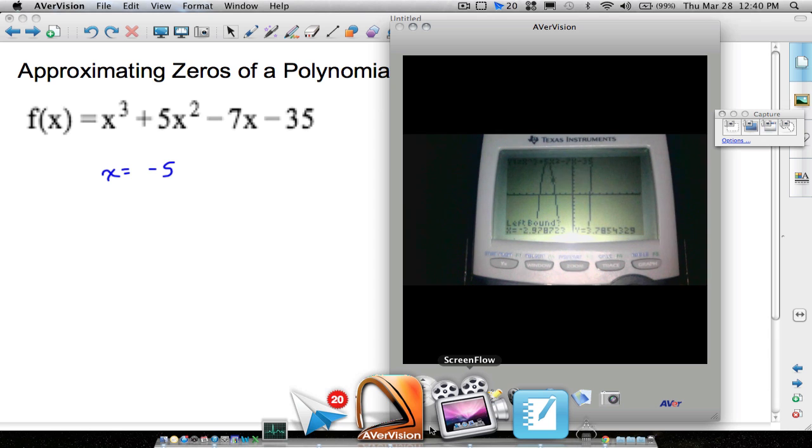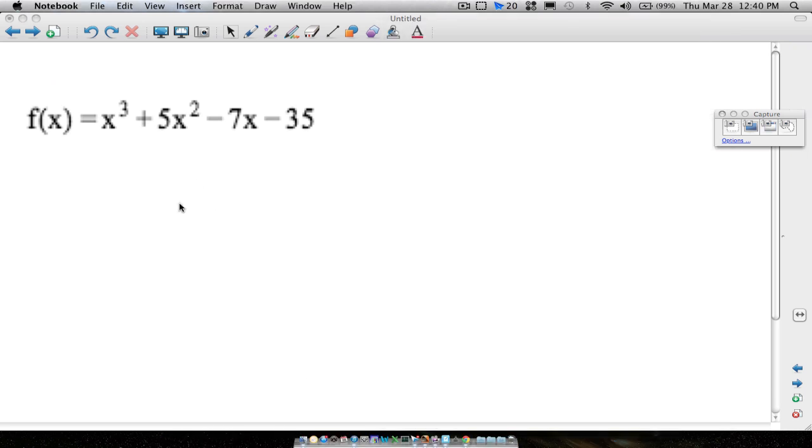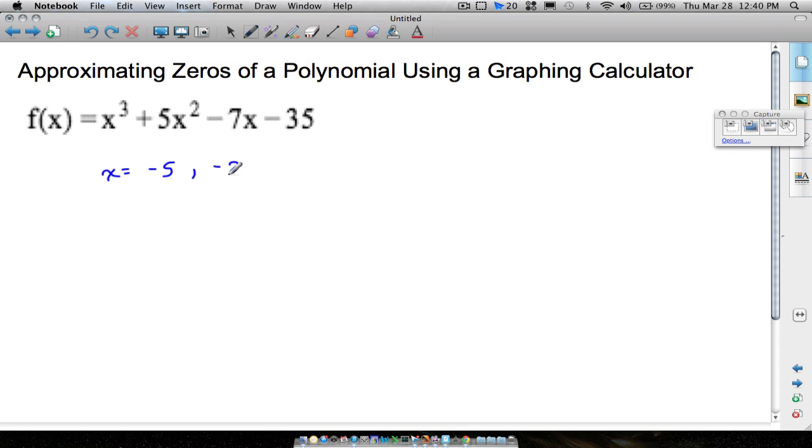Now, left bound. Notice I got this flashing cursor. It's above the x-axis, but notice this flashing cursor is on the left side of where it crosses right here. So that is a left bound. Now we can go down here. This is to the right. It's a right bound of where it crosses the x-axis. So we press enter, and then press enter one more time. So if we want to round this to say, let's just do the nearest tenth, negative 2.6. That is an approximation, but that's fine. It's not exact.